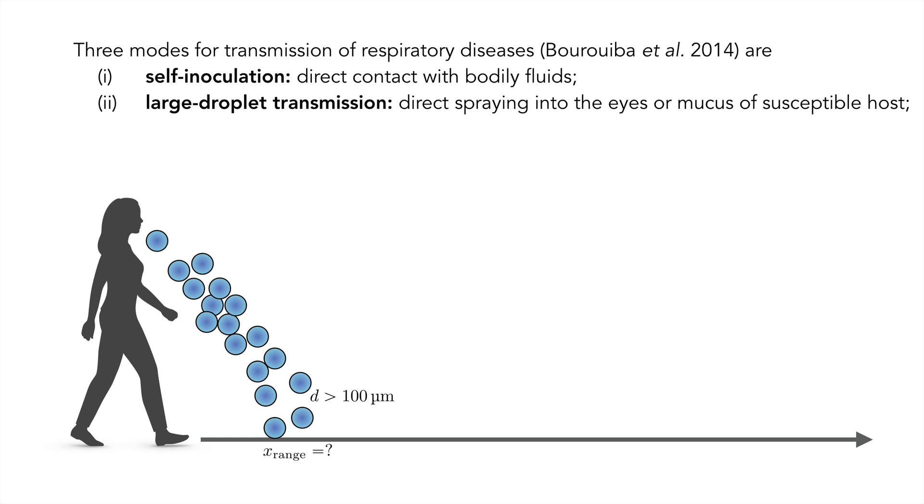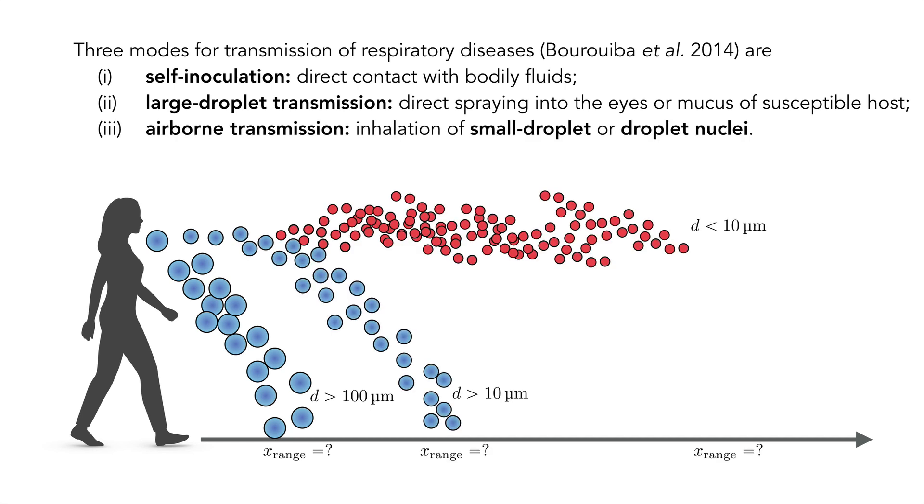The second is large droplet transmission, which arises due to the spraying of large droplets directly into the eyes or mucus of a susceptible host. The third is airborne transmission, referring to the inhalation of small droplets or the solid pathogen-bearing particles, shown in red here, that lie within the droplets once the surrounding fluid has evaporated. You'll see here in the image some common thresholds for the three types of droplets we've mentioned, ranging from 100 micrometers to smaller than 10 micrometers.